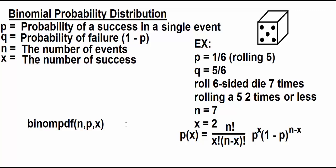Slightly different language here. Instead of getting a five exactly two times, getting a five two times or less. So I'm rolling the die seven times. I'm either not getting any fives, I'm getting just one five, or I'm getting two fives. So everything would stay the same.